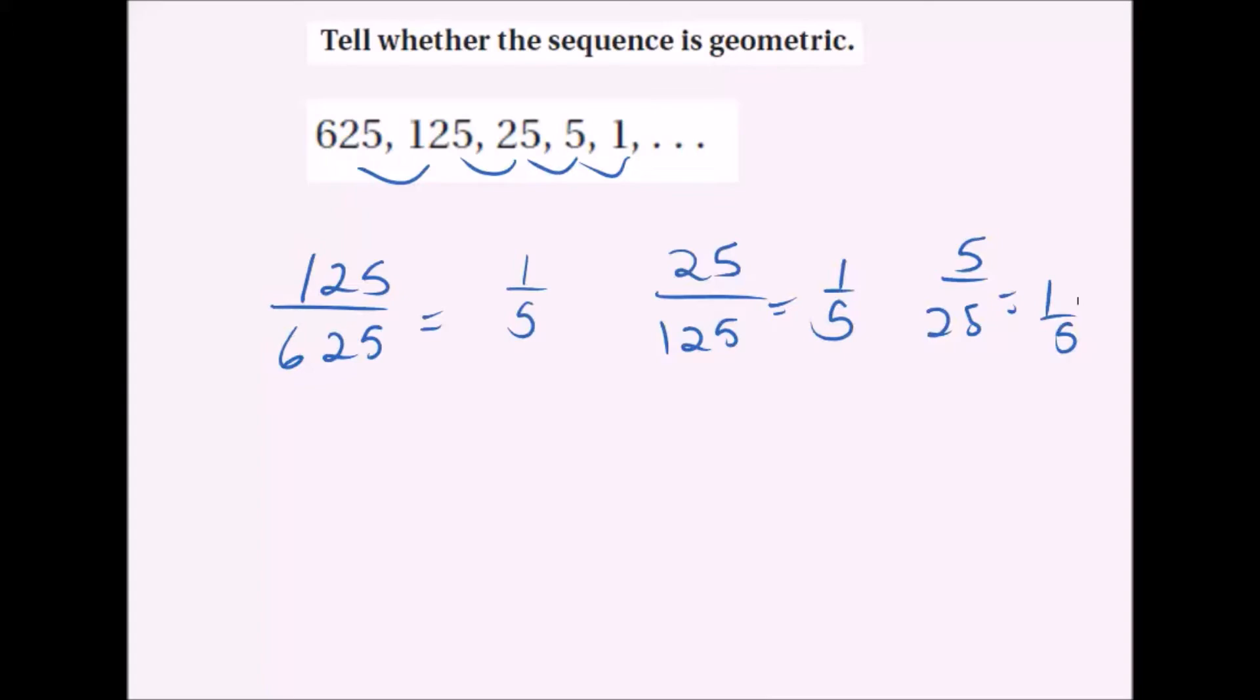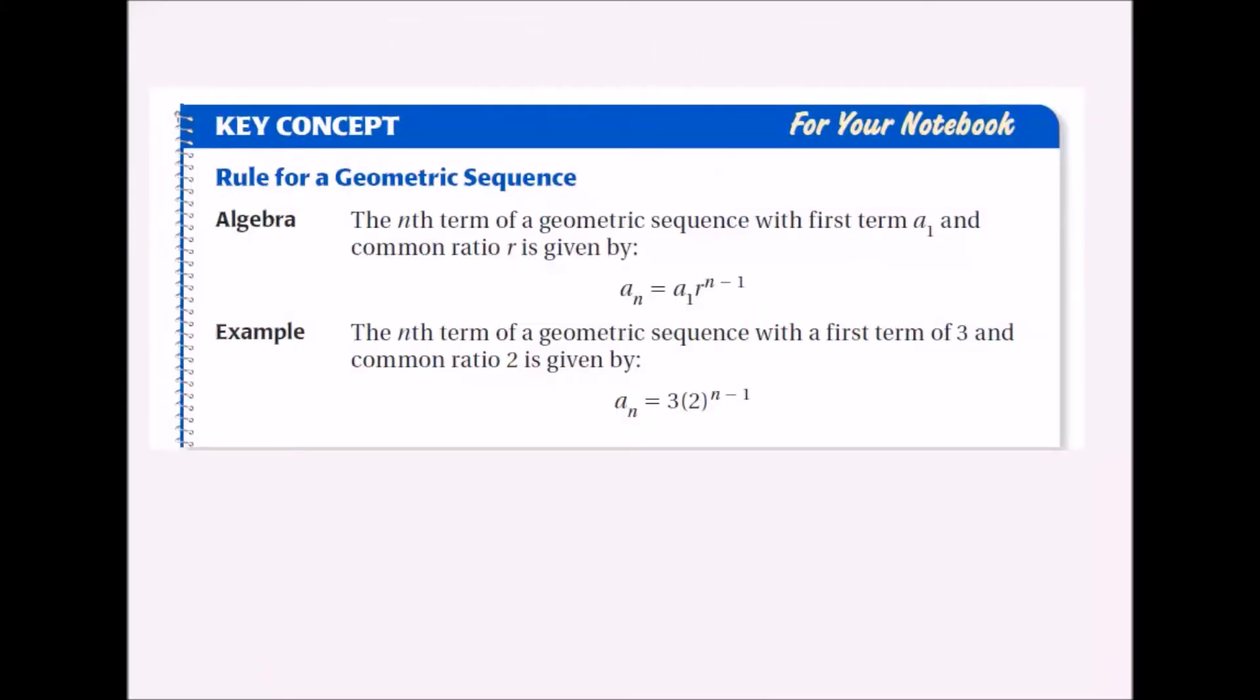If it doesn't do this, it might be another type of sequence, but it's not geometric. If you know it's a geometric sequence, it's going to fit into this formula. a_n equals a_1, that's the first term, times the common ratio r, in the last example that r would have been 1 fifth, to the n minus 1 power.